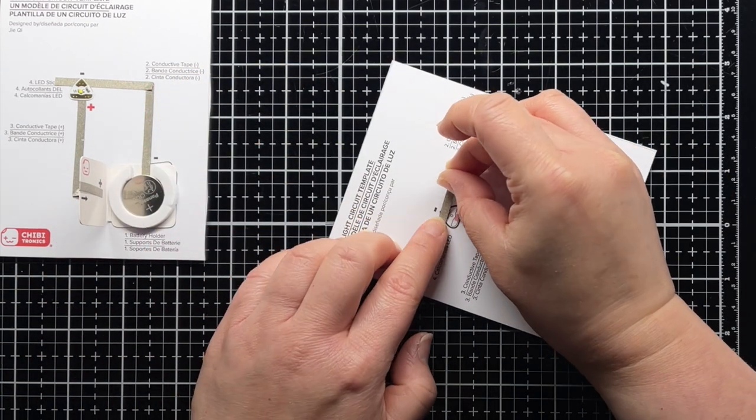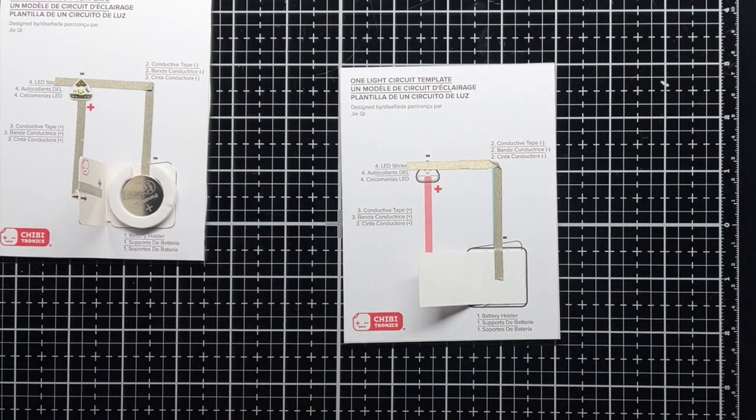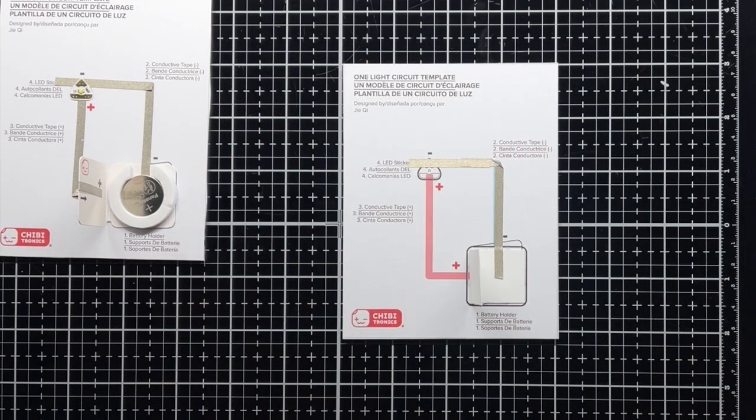We don't really recommend having multiple pieces of tape for a single line, but this is a great way to fix a mistake. I add a short piece of tape to finish covering my blue negative line.